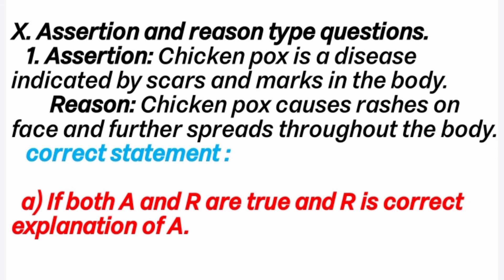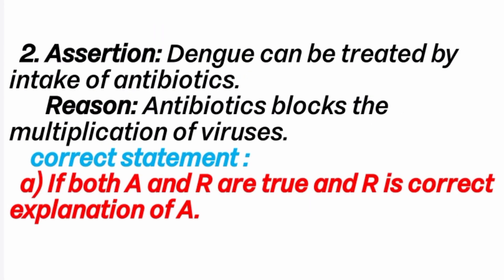10th part, assertion and reason type questions. 1st question — Assertion: Chicken pox is a disease indicated by scars and marks on the body. Reason: Chicken pox causes rashes on the face and further spreads throughout the body. Correct statement is option A — if both assertion and reason are true and reason correctly explains the assertion. 2nd question — Assertion: Dengue can be treated by intake of antibiotics. Reason: Antibiotics block the multiplication of viruses.